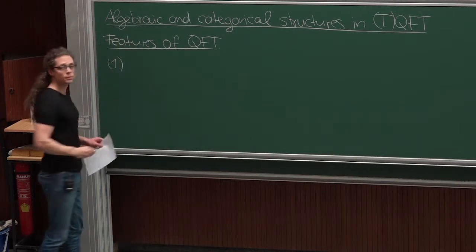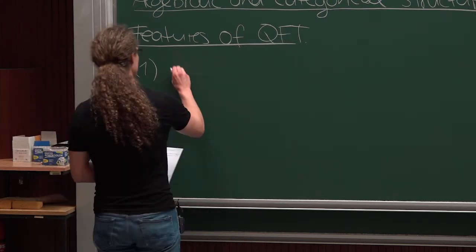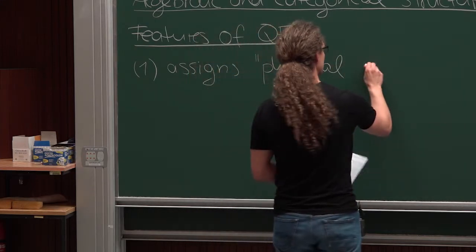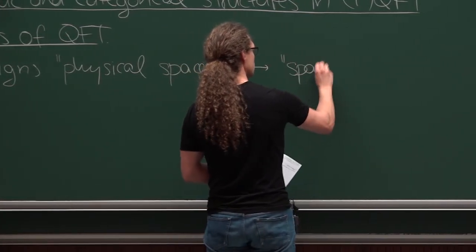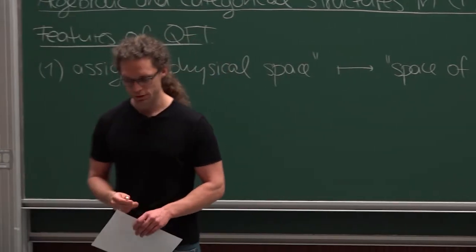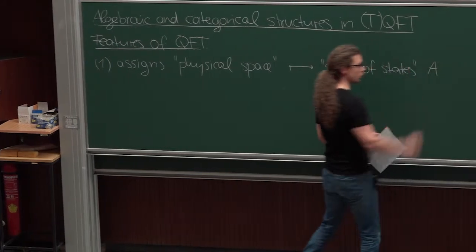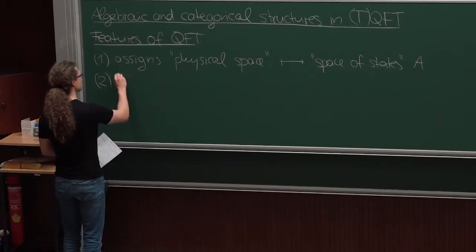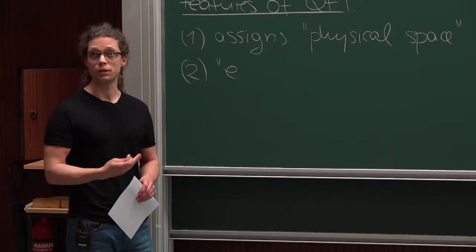One feature of quantum field theory is that to physical space, or to a spatial slice, one associates a space of states. So one assigns to physical space a space of states, which in most semi-realistic applications is a Hilbert space, possibly with more structure. I want to call it A because it will also have the structure of an algebra. Then another assignment is that to a process in space, so an evolution in spacetime, one associates certain unitary operators.